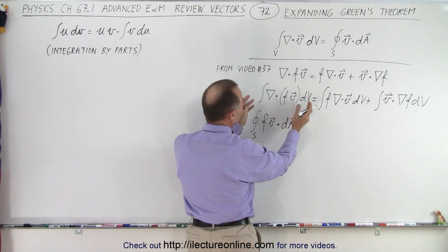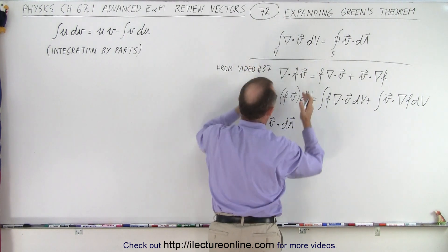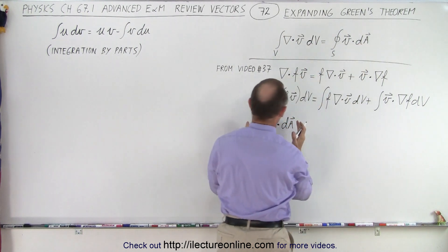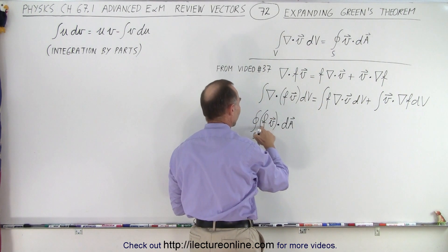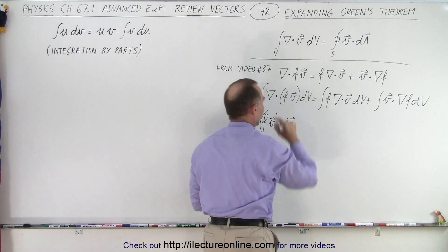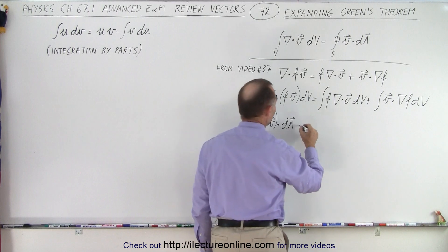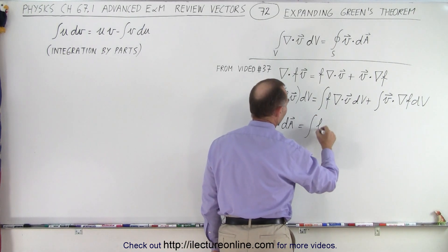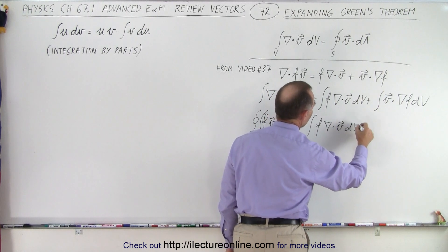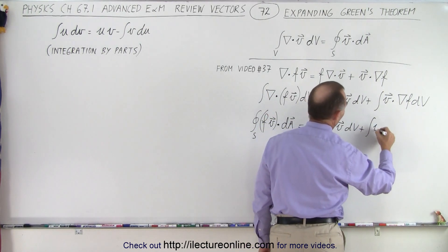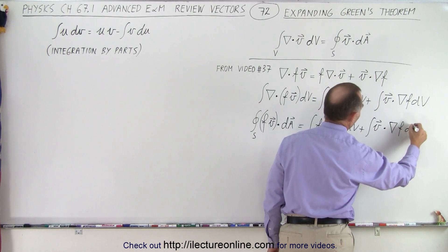What we're doing here is replacing the volume integral, which looks the same as that in Green's Theorem, by what it equals — but instead we have the product of the function times the vector rather than just the vector. So we set that equal to the integral of f times the divergence of V dV plus the integral of V times the gradient of f dV.